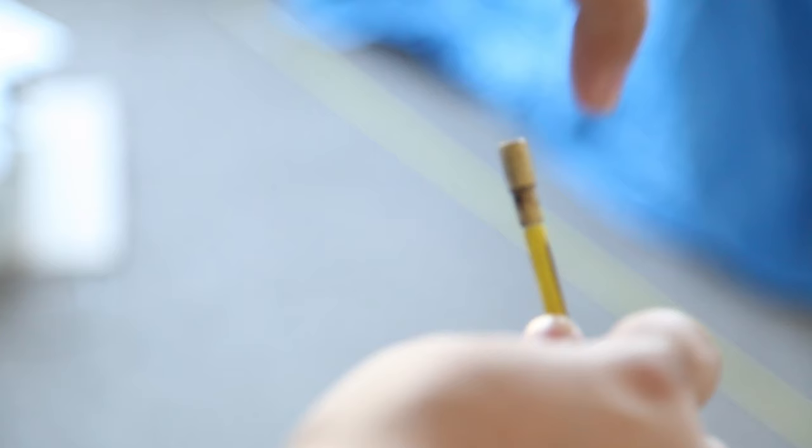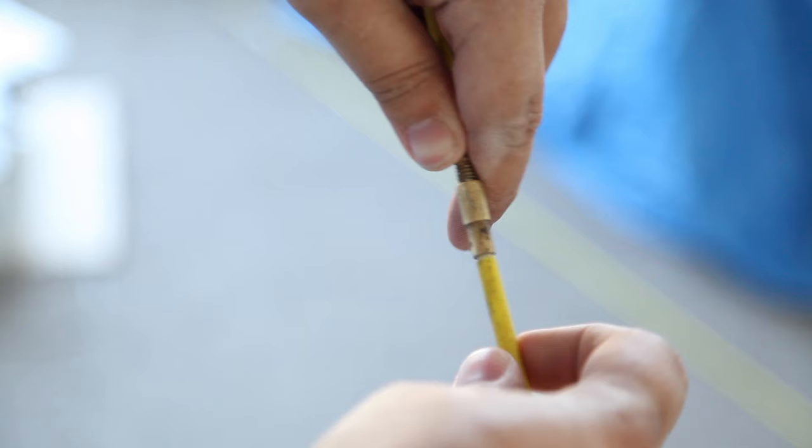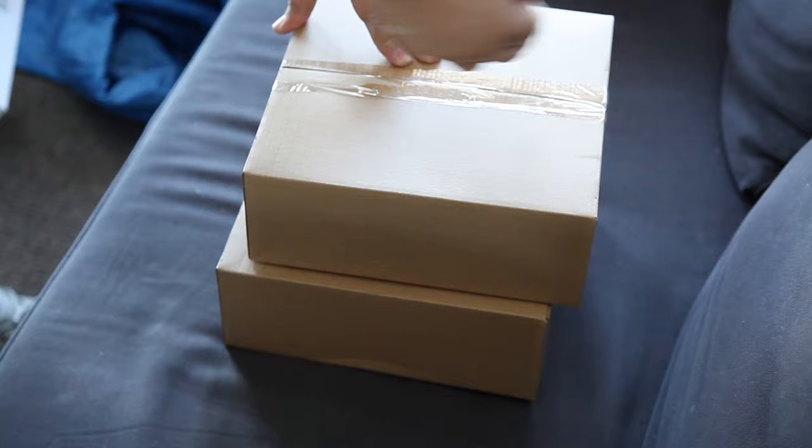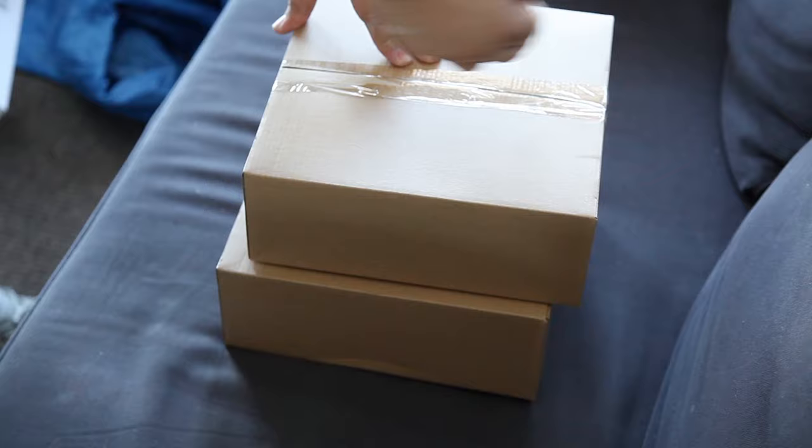The next step was to use push-pull rods. They're basically fiberglass rods, which screw together, to push the cables through from the holes all the way around and out into the wardrobe, which is where we push the cables through. That's where we're going to hide our amplifier. And, of course, we labeled every cable so we knew which one was left speaker and right speaker.